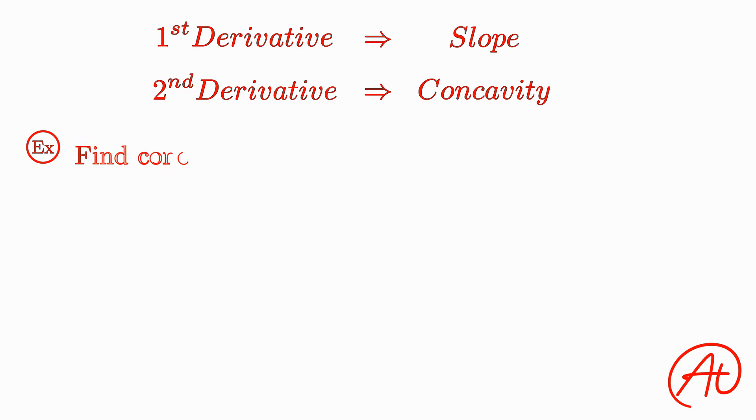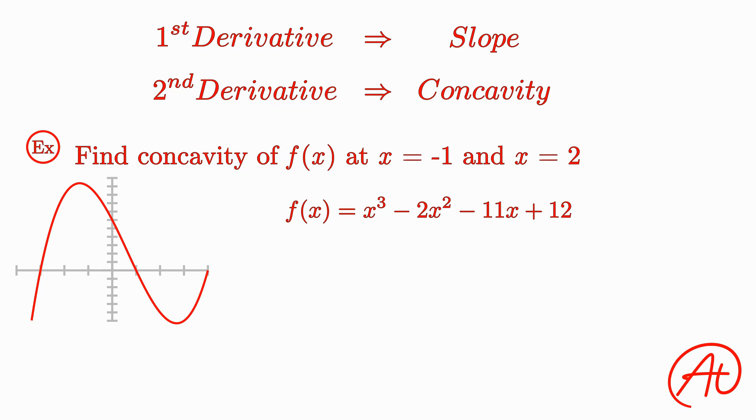Say we are asked to find the concavity of f of x at x equals negative 1 and x equals 2, where f of x equals x cubed minus 2x squared minus 11x plus 12. Just for reference, this is what the curve looks like. Essentially, we are being asked to find the concavity at each of these two points.